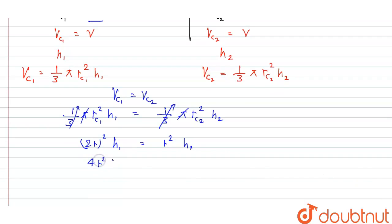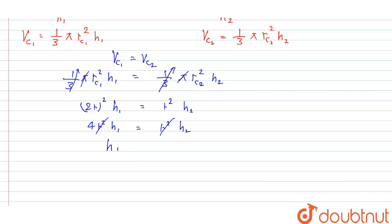So 4R²h1 equals R²h2. Cancel R² from both sides. Moving terms around, we get h1 divided by h2 equals 1 divided by 4.